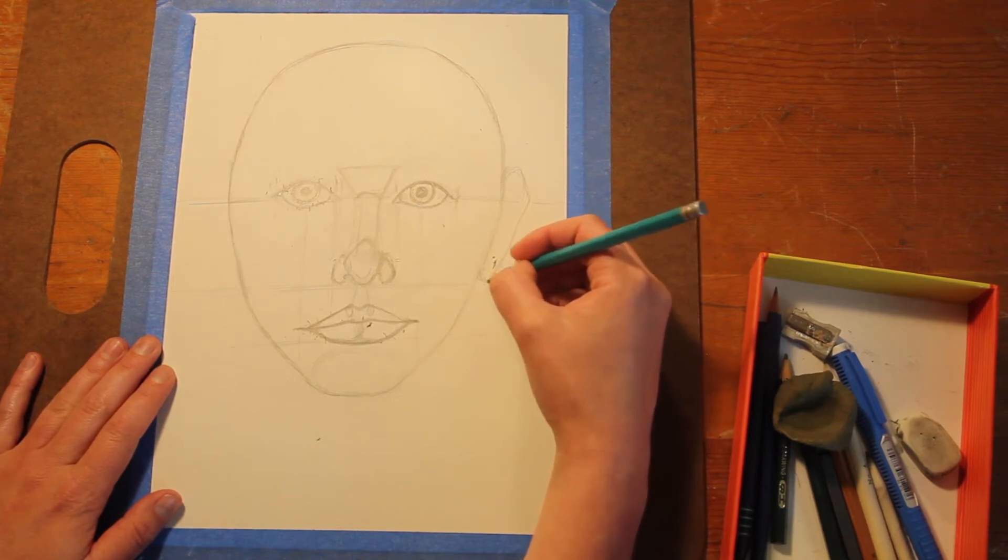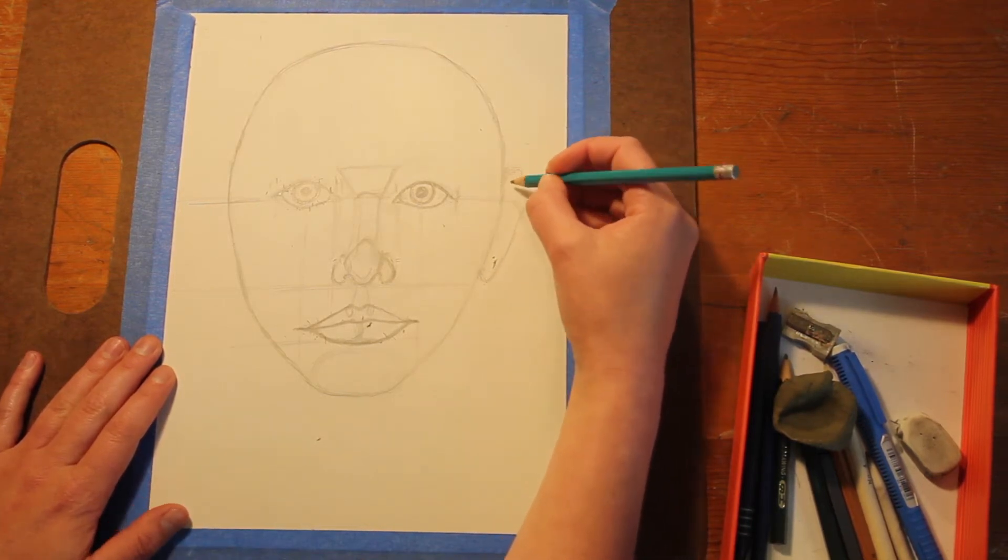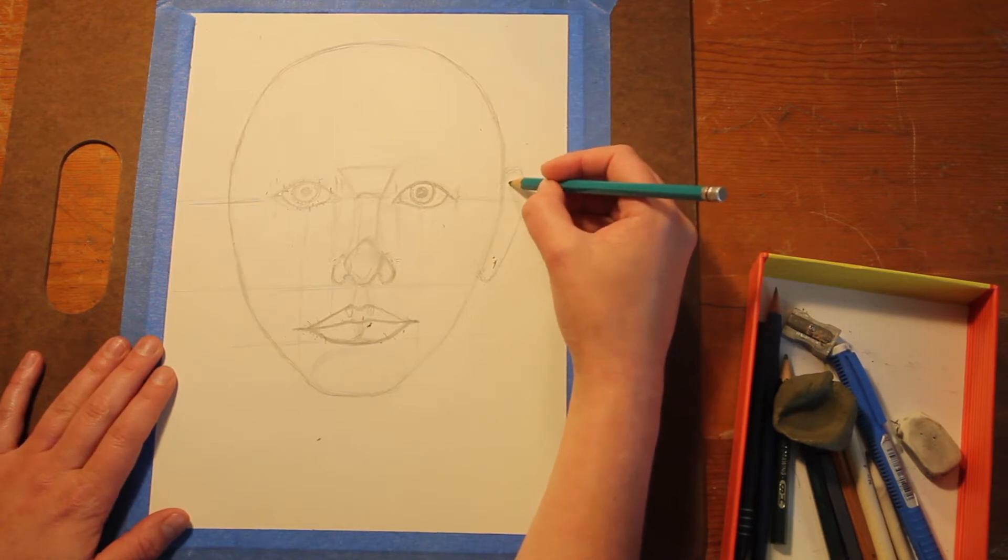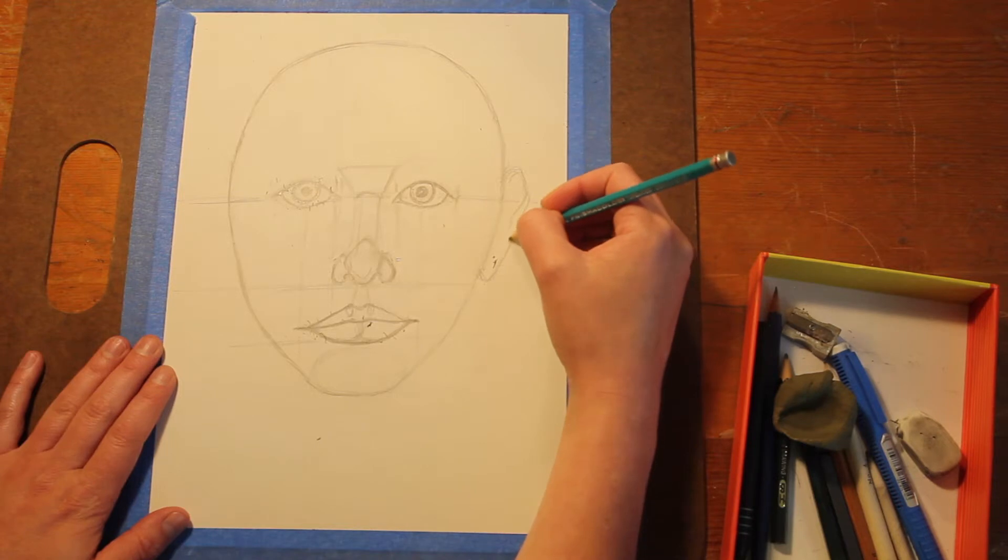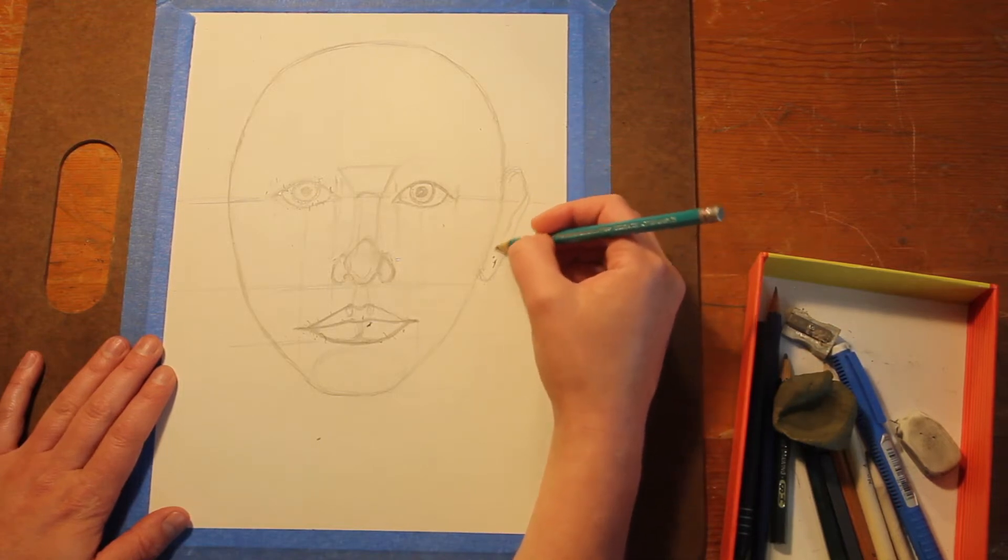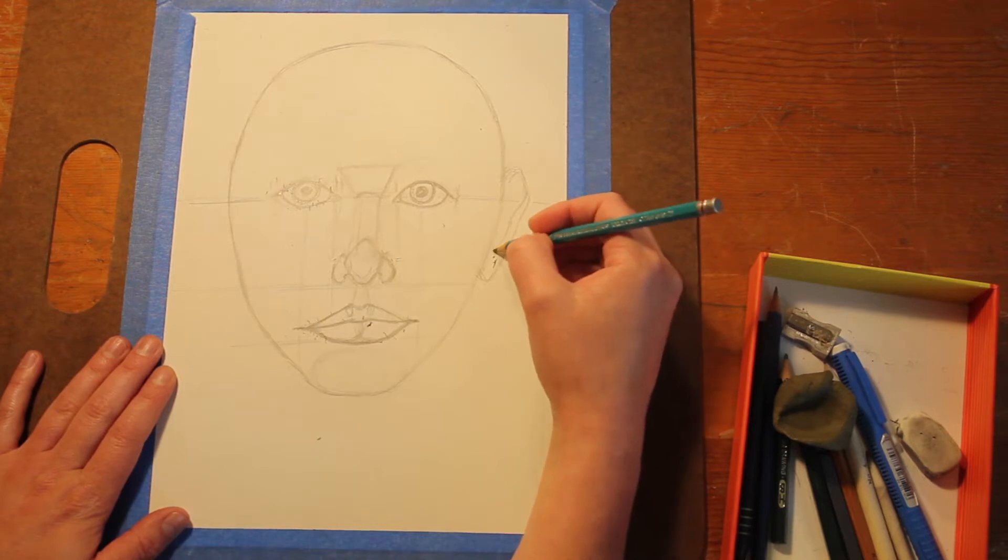I would just put the shape there in case you end up styling your hair in a way that part of your ear is going to be shown. If you know that you're going to wear your hair down for those of you that have longer hair, my hair is up right now. I don't know if I'm going to keep it that way for this portrait, probably will, so I'm just going to go ahead and just draw in the ears.